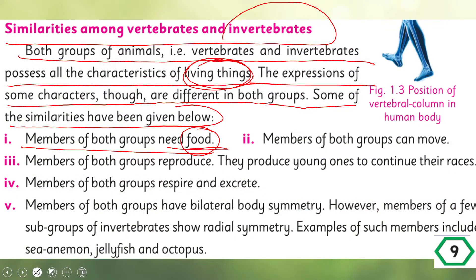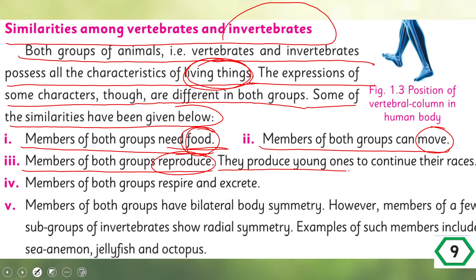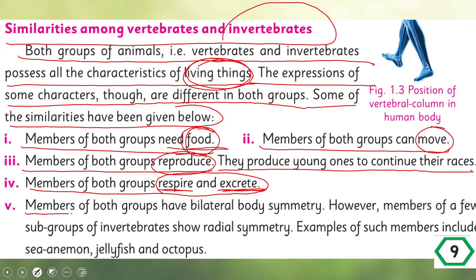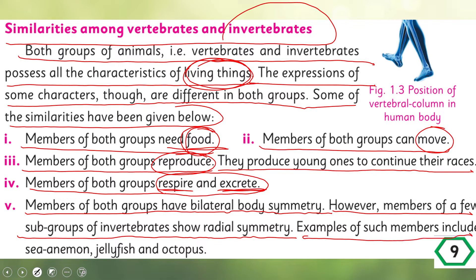Members of both groups reproduce — they produce young ones to continue their species. Members of both groups respire and excrete — both have a breathing process and both remove waste products through excretion. Members of both groups have bilateral body symmetry; however, members of a few subgroups of invertebrates show radial symmetry.